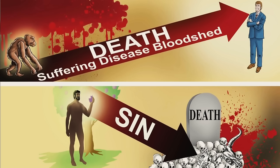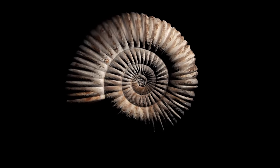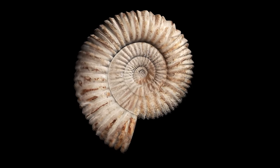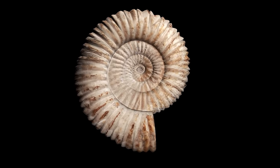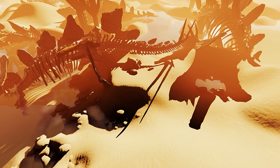Thorns are specifically mentioned in scripture — they came after Adam and Eve's sin, so they can't be millions of years old. Secularists say death, disease, suffering, and bloodshed brought you and me into existence, but the Bible says it was man's sin that brought death. So how do we explain the fossils? God had created a very good world — there couldn't be dead dinosaurs under their feet. The dinosaurs died in a catastrophe: the flood.